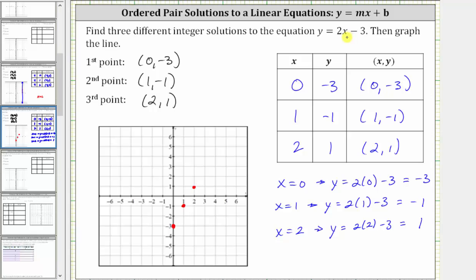The graph of y equals 2x minus 3 is the line passing through these three points and it looks like this. I hope you found this helpful.